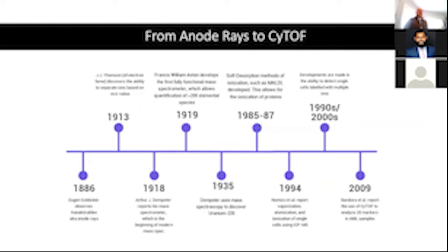also known as the guy who found and discovered electrons, which he won a Nobel Prize for, he discovered the ability to separate ions in a cathode ray tube based on their mass to charge ratios. And then in 1918, Arthur J. Dempster introduced basically one of his first mass specs, which was the beginning of modern mass spec use and techniques. And then in 1919, one of J.J. Thompson's students, Francis William Aston, developed a fully functional mass spec machine that allowed him to quantify over 200 elemental species, and he won the Nobel Prize two years later in 1921 for this, which is pretty impressive.